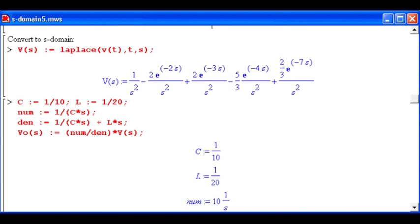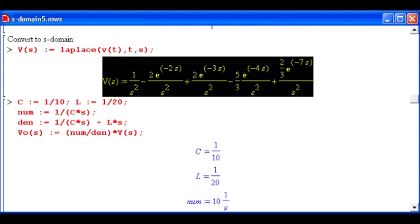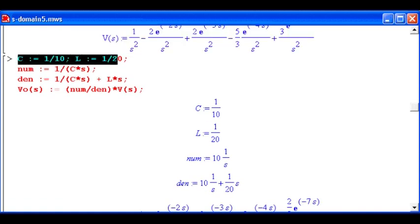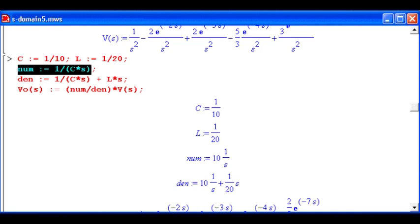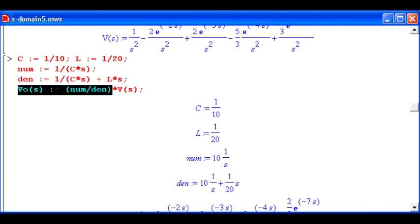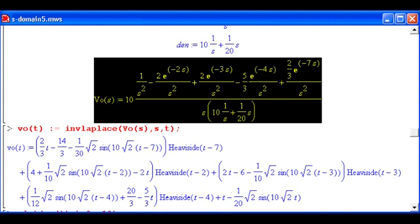So my input waveform converted to S-domain format looks like this. What I ended up doing here is leaving C and L as their original values and then just saying that I've got a numerator and a denominator based on my voltage divider equation. So my output then is numerator divided by denominator times my source voltage. And that gives me the result right there for output voltage in S-domain format.